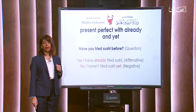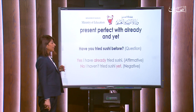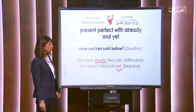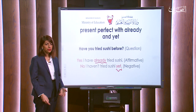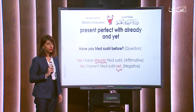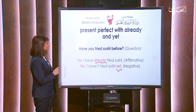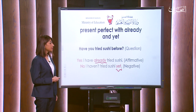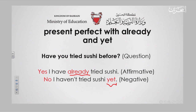Pay attention to the words highlighted in red. In the affirmative form: 'Yes, I have already tried sushi.' In the negative form: 'No, I haven't tried sushi yet.' You may know these words, but perhaps you're not familiar with their exact usage. We're going to explain this in detail.